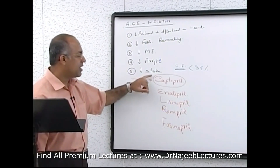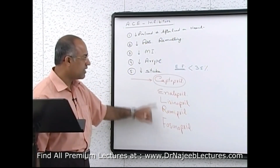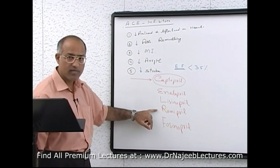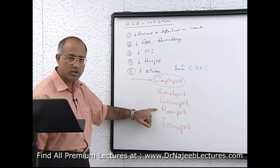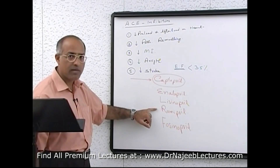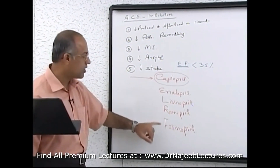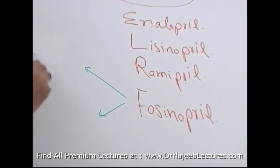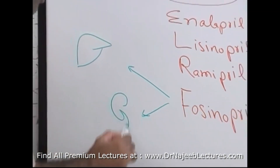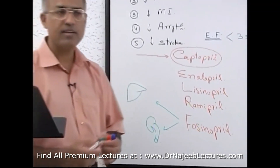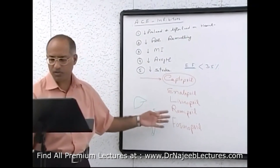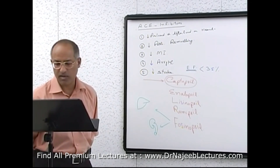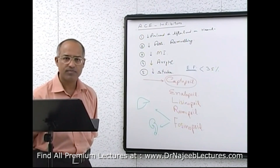Except for Fosinopril, all drugs are eliminated from the body through the kidney. Most drugs in the ACE inhibitor group are eliminated through the renal system except Fosinopril, which has balanced elimination — going out through both the liver and the kidney. All these drugs can be taken orally and preferably should be taken on an empty stomach because food retards their absorption.